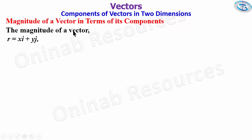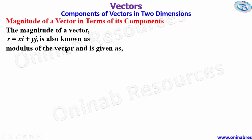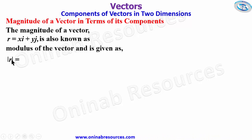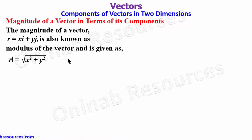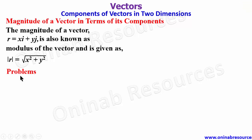The magnitude of a vector r = xi + yj is also known as the modulus of the vector. The modulus of r, which is also known as the magnitude of the vector, is the square root of the sum of the squares of the i component and the j component. We now look at problems.